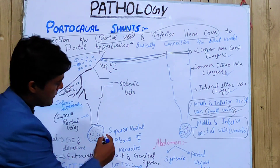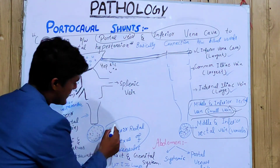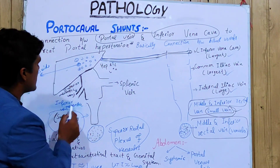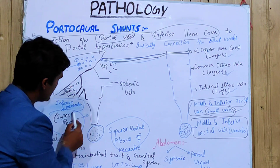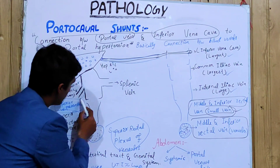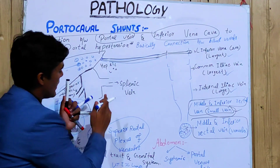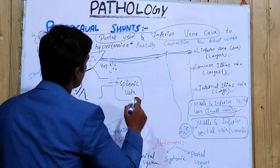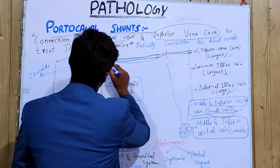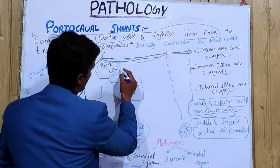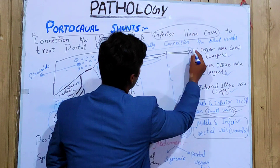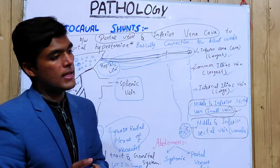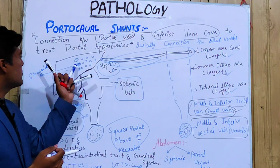For the portal system: first we have the superior rectal plexus venules, then the superior rectal veins, then the inferior mesenteric vein, then the superior mesenteric vein, and just in front we have the splenic vein for the spleen and the hepatic vein, which ultimately form a shunt with the inferior vena cava.